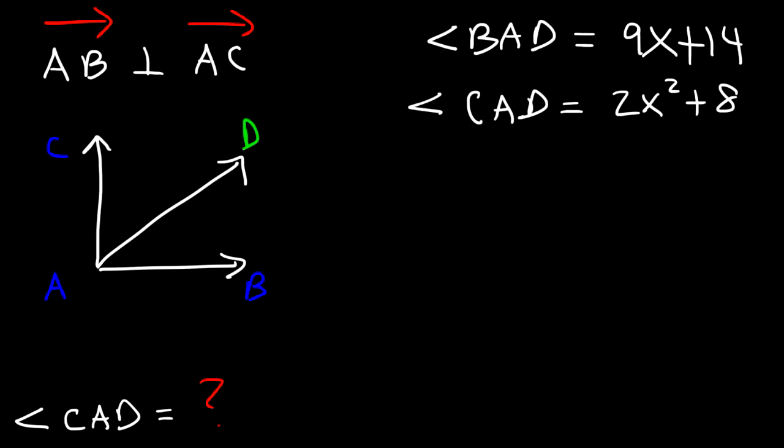So feel free to work on this problem. We're given that AB and AC are perpendicular to each other. Therefore, angle CAB, that is this angle here, that's equal to 90 degrees. It's a right angle. Now, angle CAB is the sum of angle BAD and angle CAD.